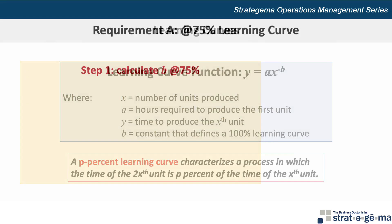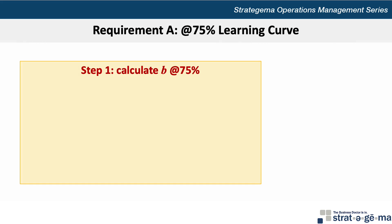If we apply this to requirement A using a 75% learning curve, this means that the expected time to install the fourth copier is 75% of the time it took to install the second copier. We can solve our problem in two steps. Step one is to calculate the b constant at a 75% learning curve, which is calculated as the log of 0.75 divided by the log of 2.